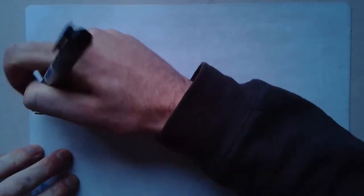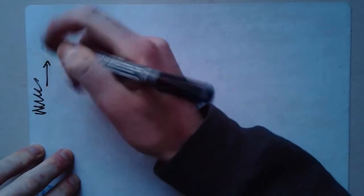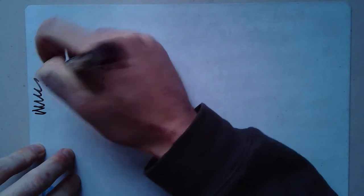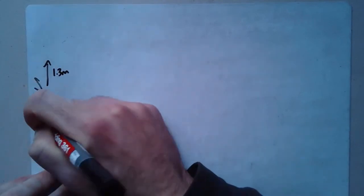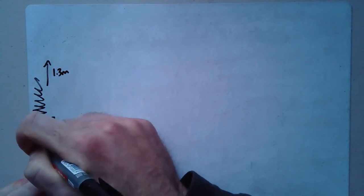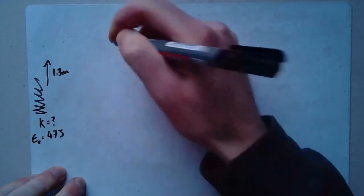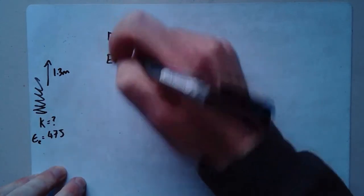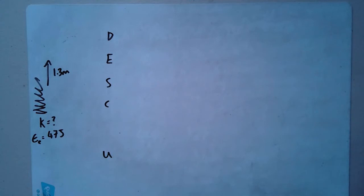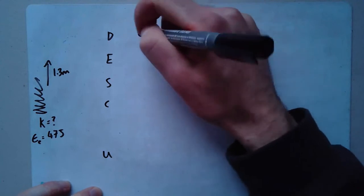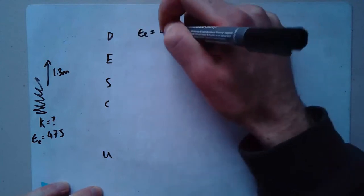Okay, now the last one we do before you guys go off and do some practice. Let's say I've got a spring. The extension we'll call 1.3 meters. I don't know what k is, but the energy that it took to do that, we'll say was 47 joules. D E S C U. Again, if you think you're ready to do this, just go off and do it and check the answer in a minute. Or once you've done it really.